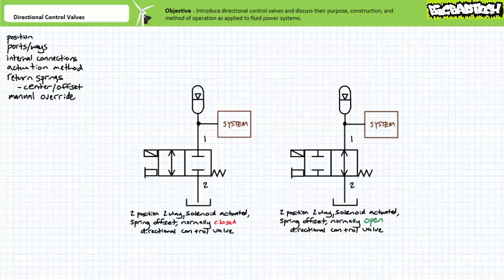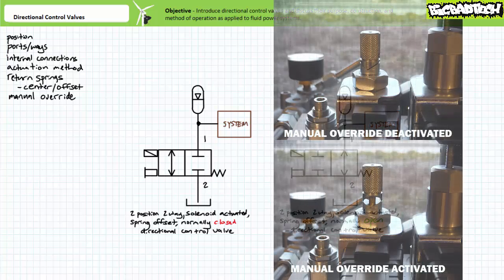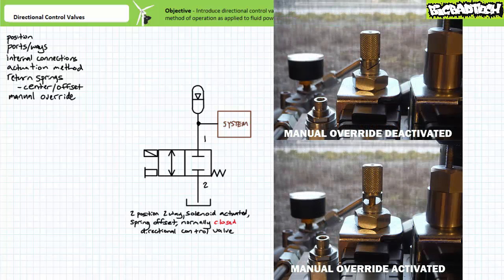Some automatically actuated directional control valves incorporate a means of manually overriding the valve's deactivated state. The schematic symbol for a manual override looks like a top outlet on its side. In the absence of a pilot electrical signal or in the event of a damaged solenoid coil, an operator can push or pull the manual override to actuate the valve. The manual override on the normally closed valve would dump the pressurized fluid in the accumulator to tank. Manual overrides may or may not feature a detent that locks the valve in the new position.